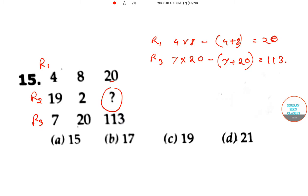So now we can calculate our main problem, the row 2. So in row 2, we can calculate it in this type: 19 into 2 minus 19 plus 2. The end result is 17. So in this question, the answer is B, 17.